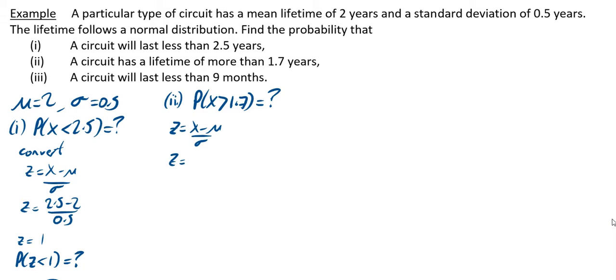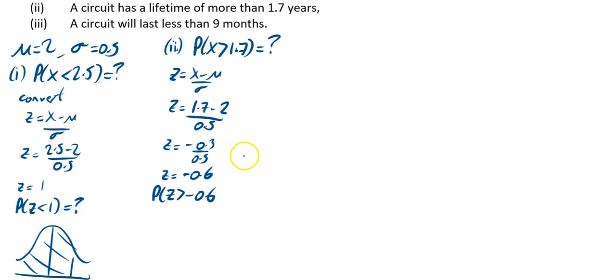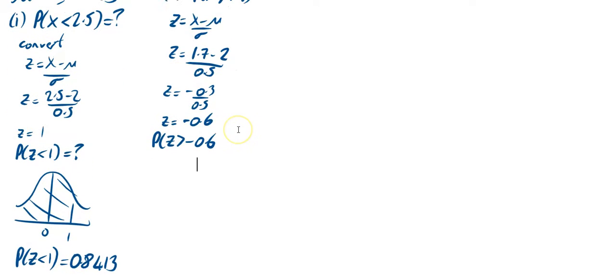Z equals 1.7 minus our μ. Just check your μ is 2 divided by 0.5. So that is going to be minus 0.3 divided by 0.5. That is going to be the same as minus 0.6. So what we really want to find in this one is probability that Z is greater than minus 0.6, a bit trickier than the last one.